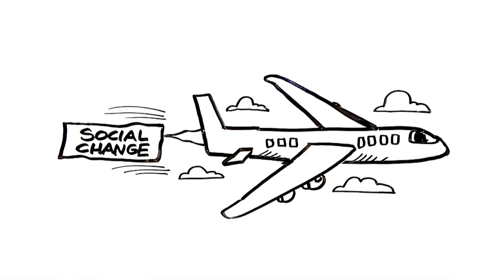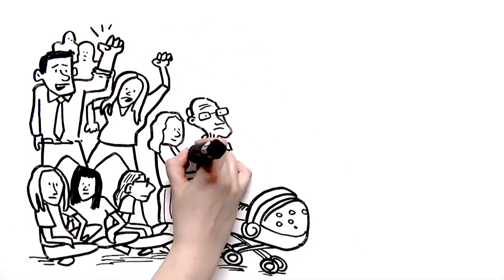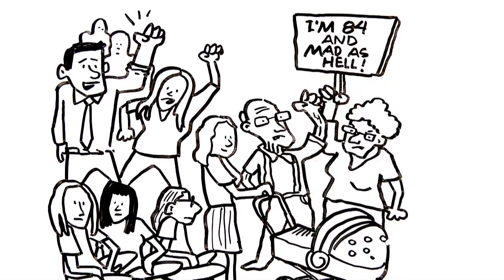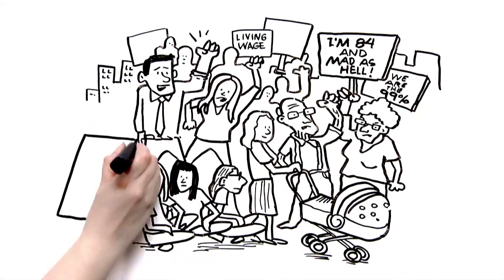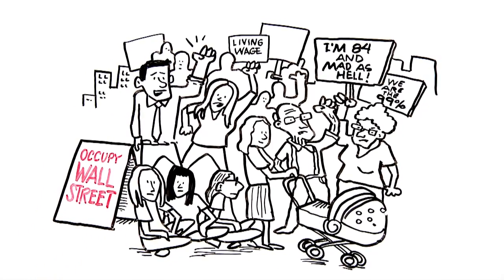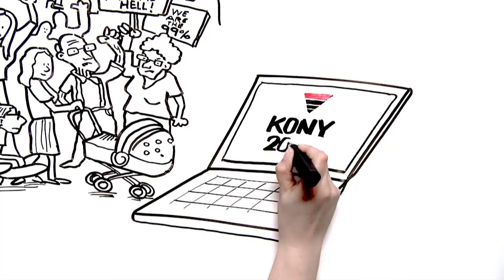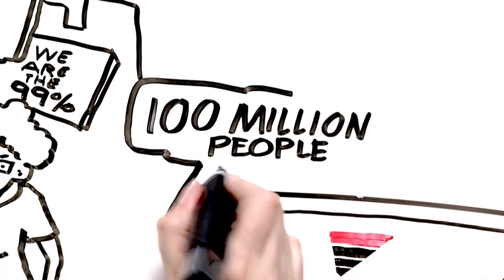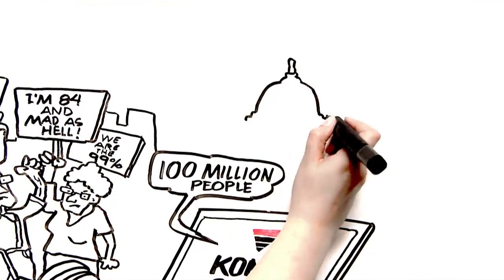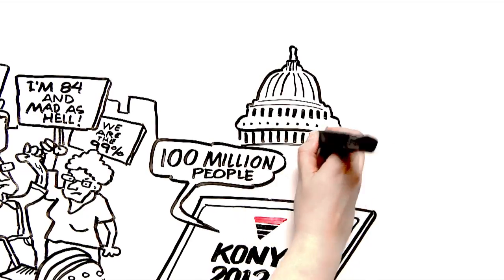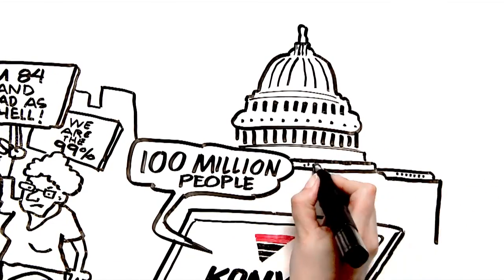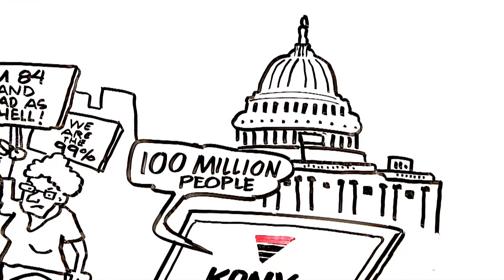Social change is in the air, perhaps like never before. Occupy Wall Street is the tip of the iceberg of a global movement for a world that's fair and just. The Kony 2012 video was seen by over 100 million people in a week. On the one hand, it led to a movement that caused the US Congress to take action and help hunt down the brutal warlord.